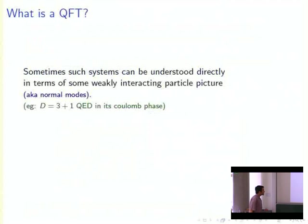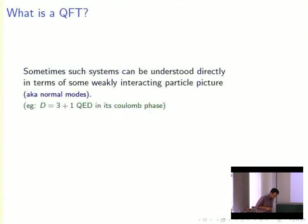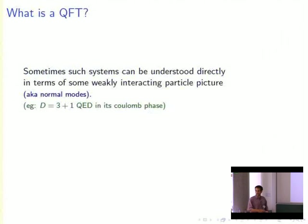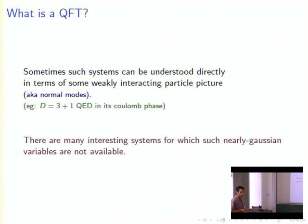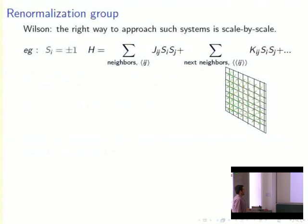Sometimes such systems can be understood directly in terms of weakly interacting particles — like many systems in particle physics — and you can just solve it. But very often there isn't a change of variables that makes the action Gaussian, so it's not just a bunch of weakly coupled harmonic oscillators. You need some deeper understanding, and that deeper understanding came from Ken Wilson, rest in peace.